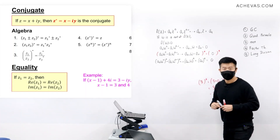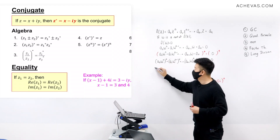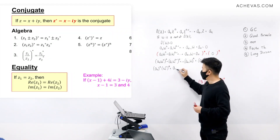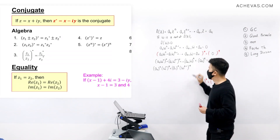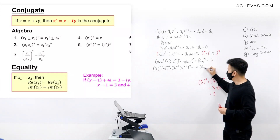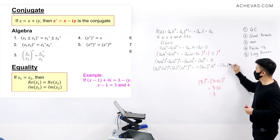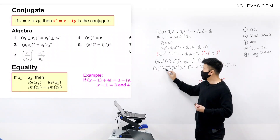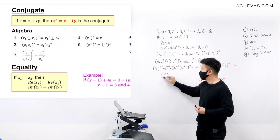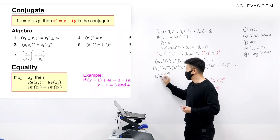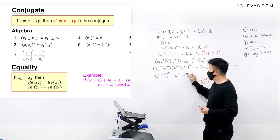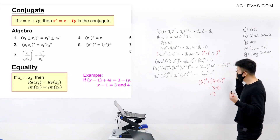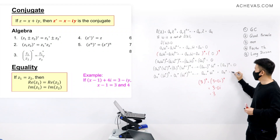One more rule we can apply is property 5, which says that w^n conjugate is the same as (w conjugate) to the power of n. I can't do much to the coefficients, so rewriting: a0 conjugate times (w conjugate) to the power of n, plus a1 conjugate times (w conjugate) to the power of n minus 1, all the way until a_{n-1} conjugate times (w conjugate), then plus a_n conjugate — this is equal to 0.